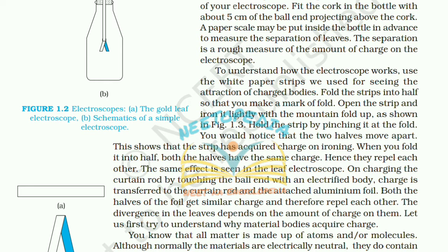To understand how the electroscope works, use white paper strips. Fold the paper strip into halves, iron it lightly with the mountain fold up, and hold the strip by pinching it at the fold. The two halves move apart — this shows that the strip acquired charge on ironing. Both halves have the same charge, hence they repel each other. The same effect is seen on the leaf electroscope: on charging the curtain rod by touching the ball end with an electrified body, the charge transfers to the rod and the aluminum foil halves get similar charge and repel each other.